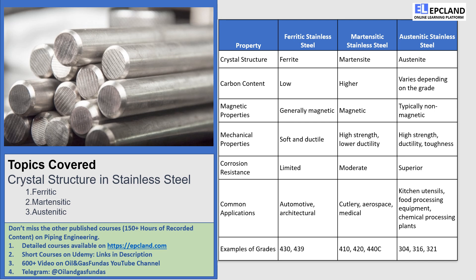Now that we've explored the different types of stainless steel, let's talk about some common applications for each. Ferritic stainless steel is often used in automotive and architectural applications. Martensitic stainless steel is commonly used in cutlery, aerospace, and medical devices. Austenitic stainless steel is used in a wide range of applications, from kitchen utensils to food processing equipment and chemical processing plants.